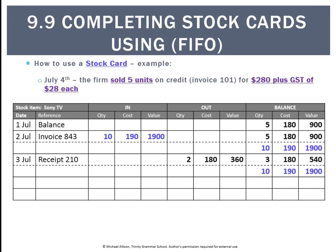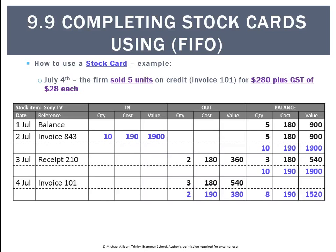We then have a transaction where we sell 5 units on invoice 101 at $280 each plus GST. Again, the $280 is not relevant for the stock card. With a current balance of 3 units at $180 and 10 at $190, I assume the first 3 units are $180, and the next 2 of the 5 come at $190. So in the out column, I record 3 at $180 and 2 at $190. That leaves 8 units at $190 for a balance of $1,520.